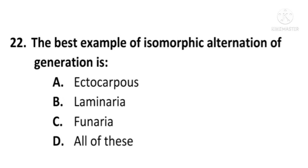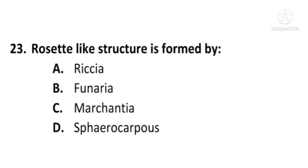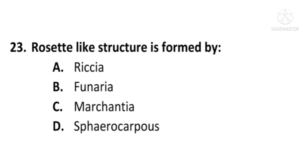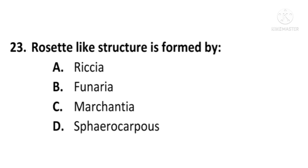Next question: The rhizoid-leg structure is formed by — A) Riccia, B) Funaria, C) Marchantia, or D) Sphaerocarpus. The correct option is A, Riccia. The rhizoid structure is formed by Riccia; A is the correct option.